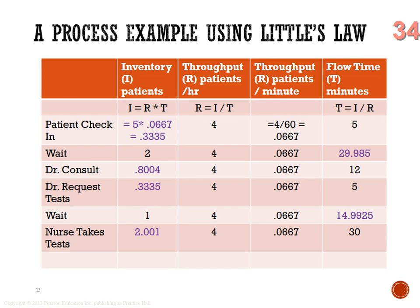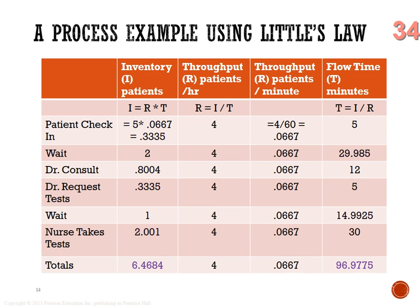We then continue with Little's Law: take throughput × 0.0667 patients per minute. It's the same concept, just different units of measure. We have two of three pieces of information and use Little's Law to calculate the open cells. For the entire process: on average 6.5 patients in the system, throughput of 4 patients per hour, and it takes on average 96.97 minutes for someone to go through the complete process from entry to exit.